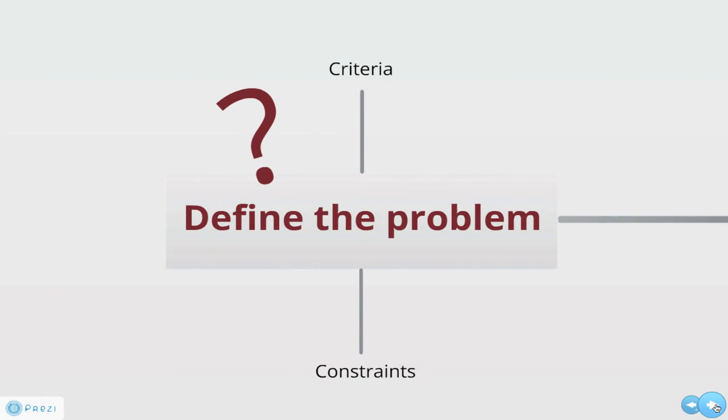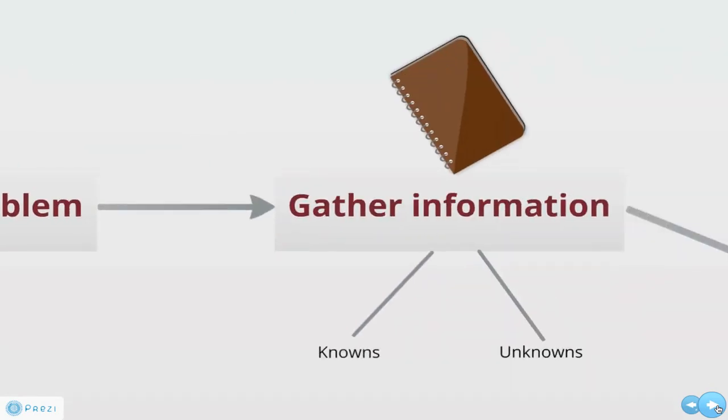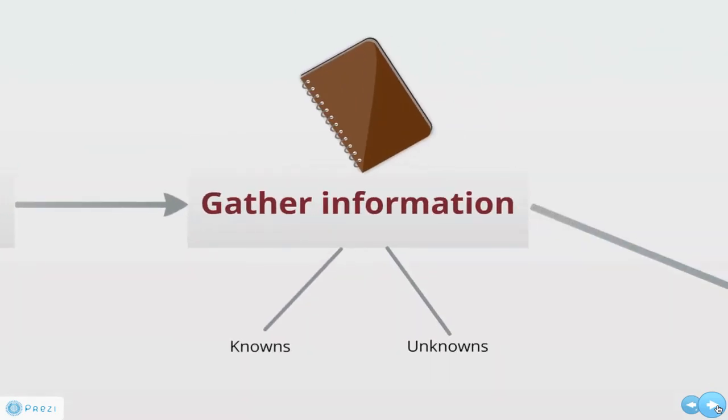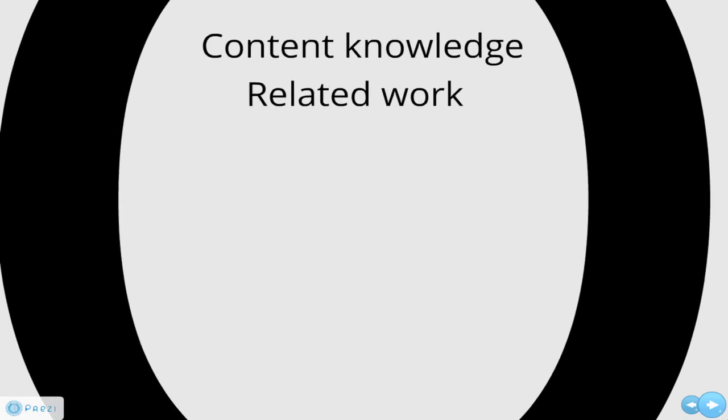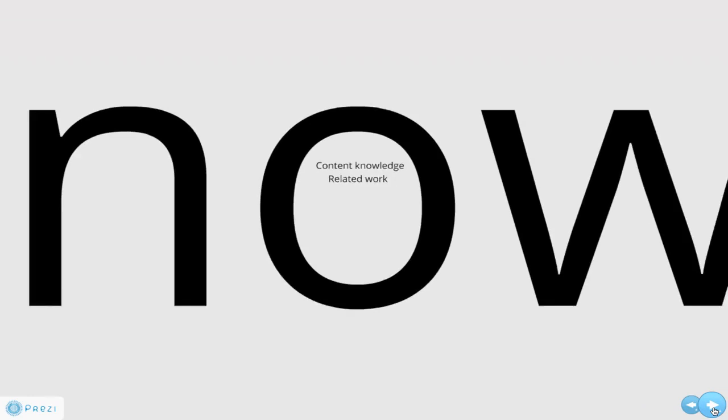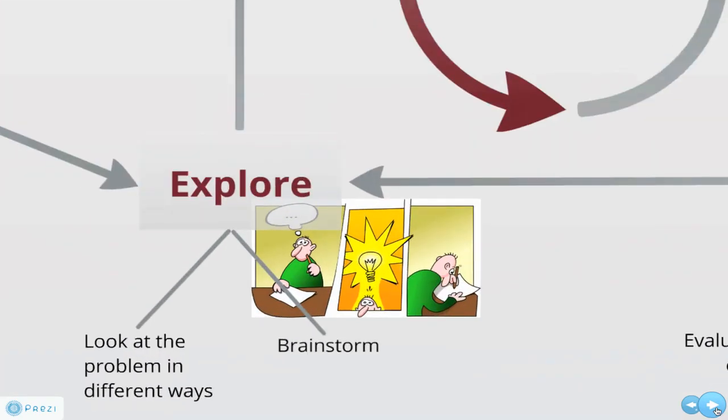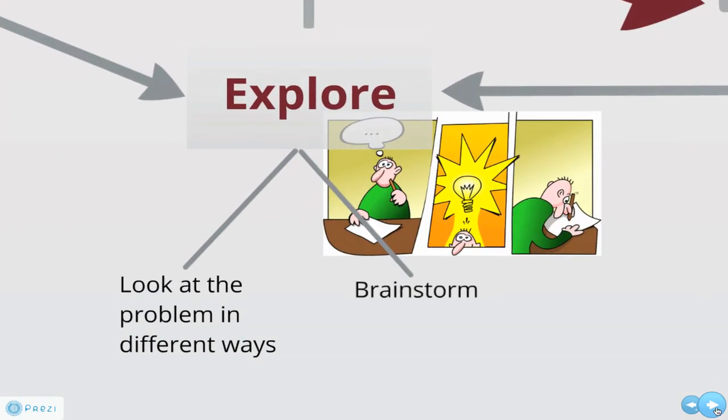After defining the problem, you need to gather information. What are the knowns and unknowns? What content knowledge is needed to solve the problem? Have others worked on a similar problem before? The next step is to explore. Look at the problem in different ways. Brainstorm different approaches to meeting the criteria given the constraints.